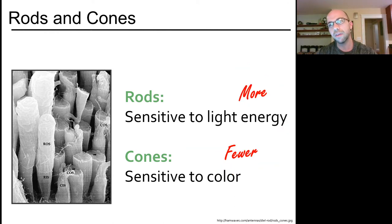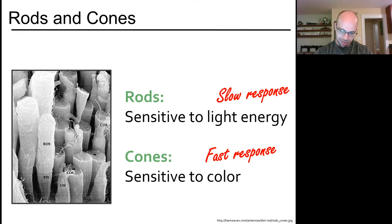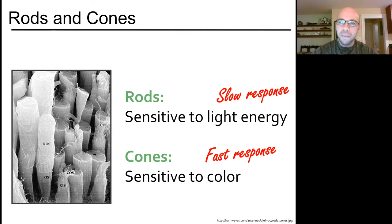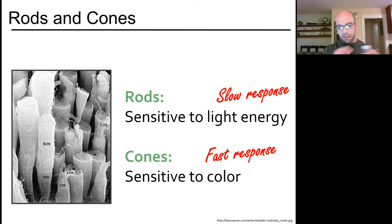In general, you have more rods than you have cones. You can think of rods as relatively slow response, whereas cones are relatively fast response. Essentially, your rods are blunt instruments — they work even when you're walking around in the dark and just give you an idea of what's going on in a scene — whereas your cones provide all that additional detail about color for focusing on a scene beyond that initial impression.